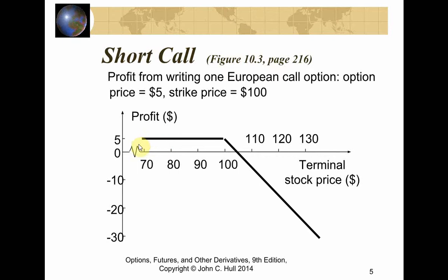As a rule of thumb: if you see that the constant part — the intercept — is above the zero line, that means it's a short position in options, because this part represents the premium inflow. When this goes below the zero line, that means it's a long option position because it is a premium outflow. By looking at this immediately you can figure out that this is a short option position.